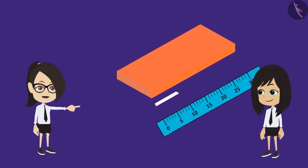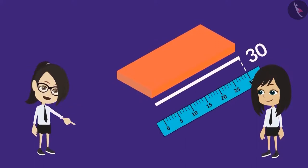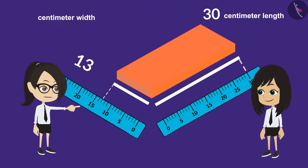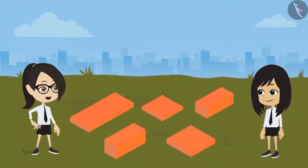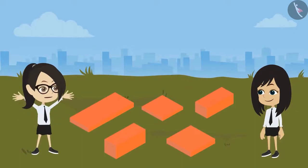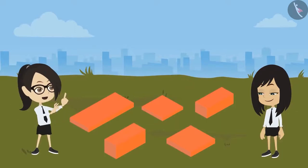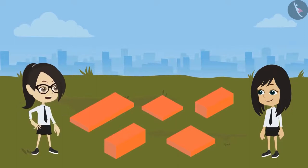This brick is the longest of all. Its length is 30 cm, its breadth is 13 cm, and its height is 5 cm. After we have measured the length, breadth, and height of all these bricks, we can easily tell the difference between them.